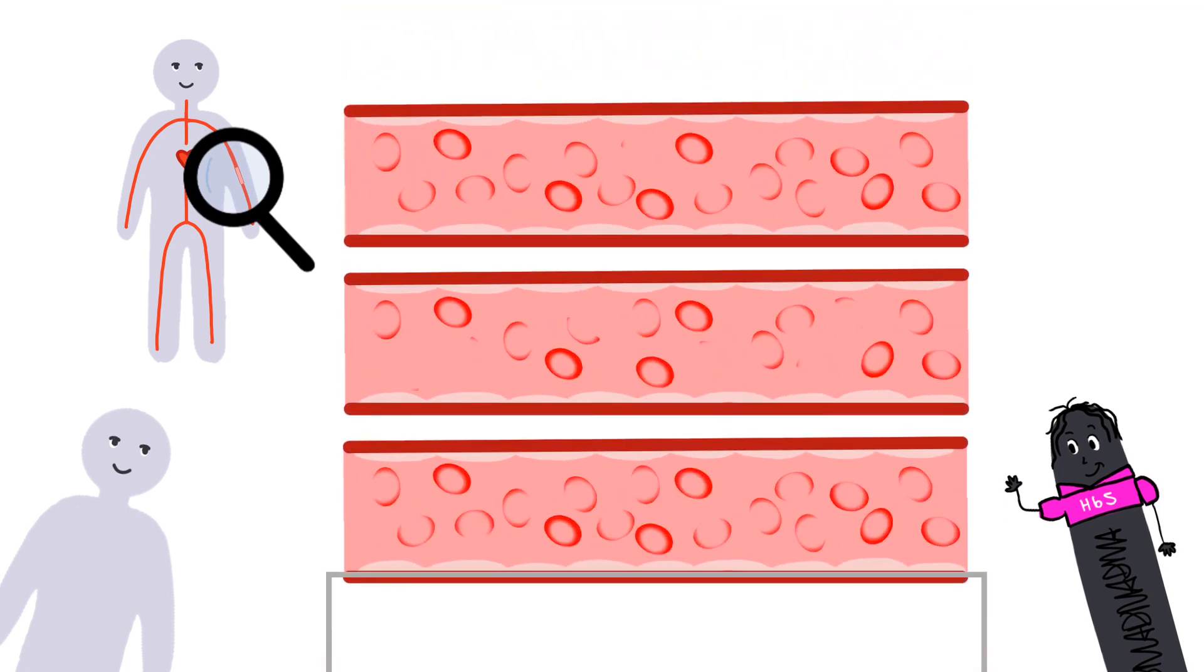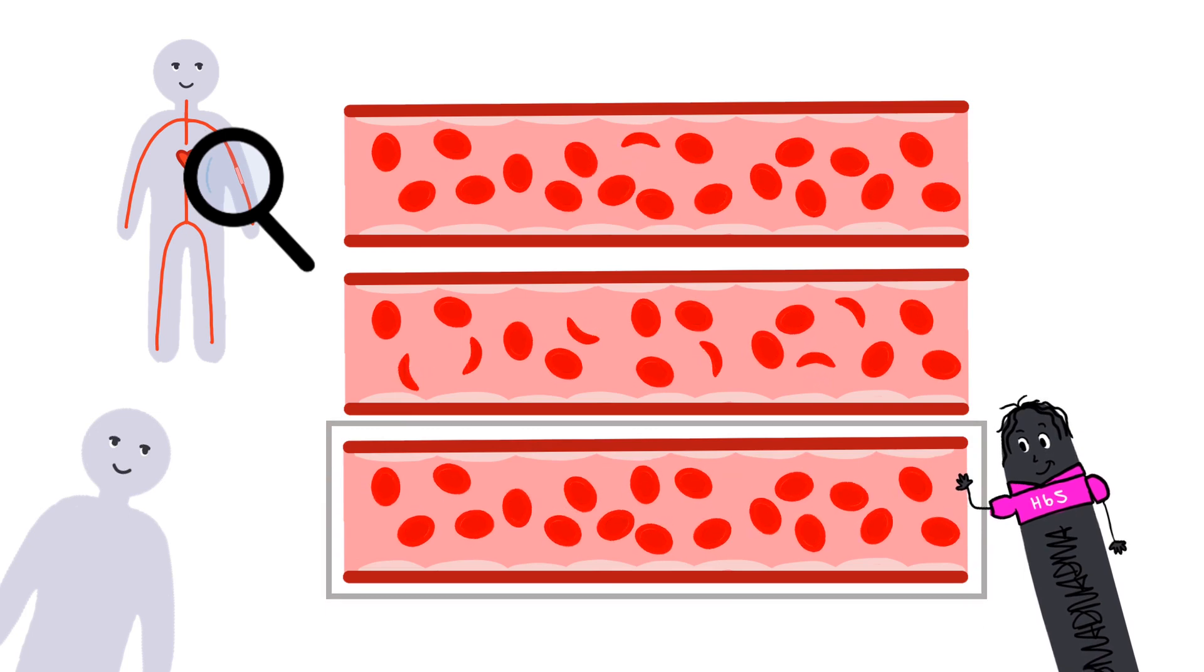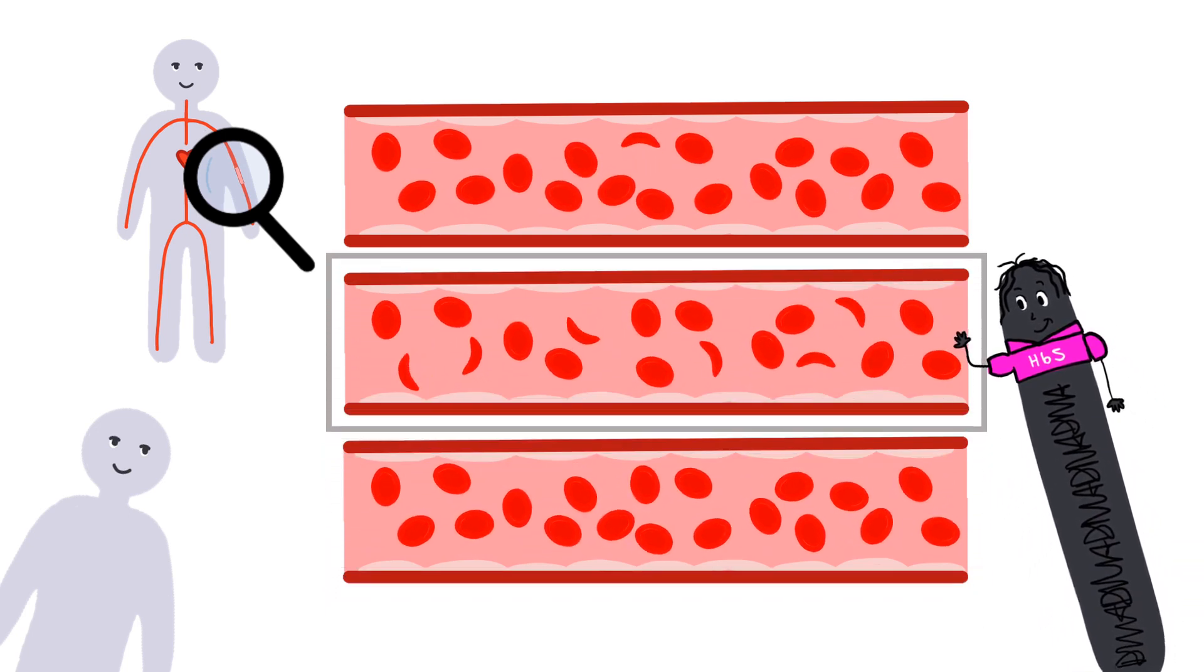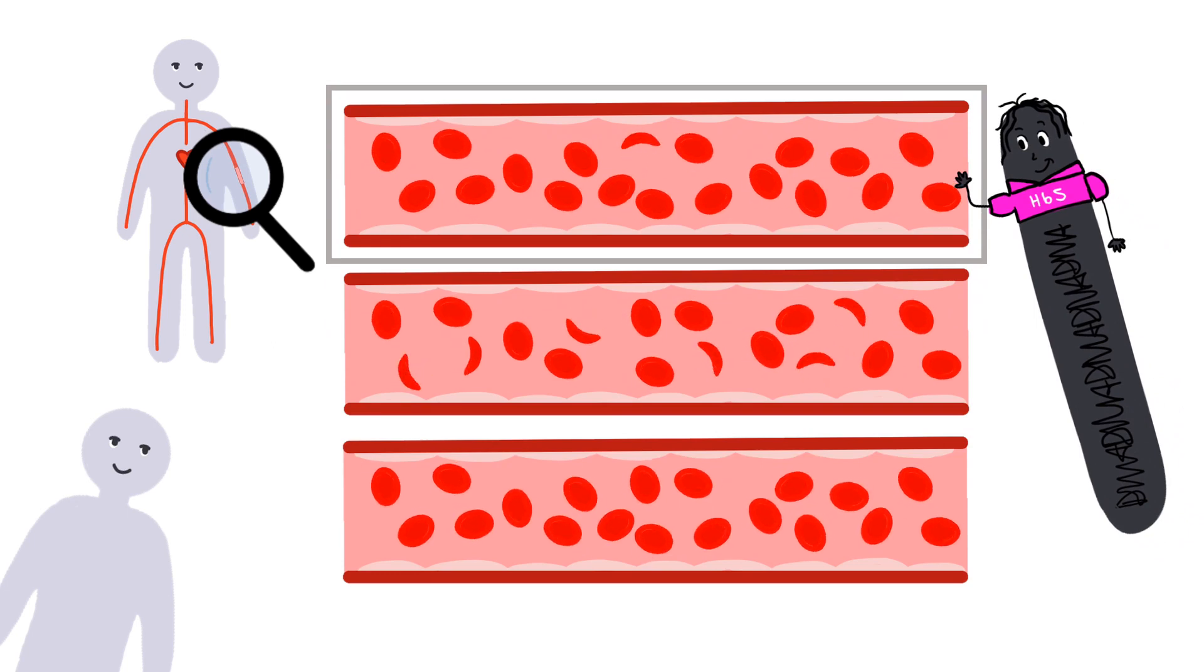Normally, your blood looks like this, with no sickle cells. If you have a high number of sickle cells, like this, you have sickle cell anemia. But if your blood looks like this, with some sickle cells, you have the sickle cell trait.